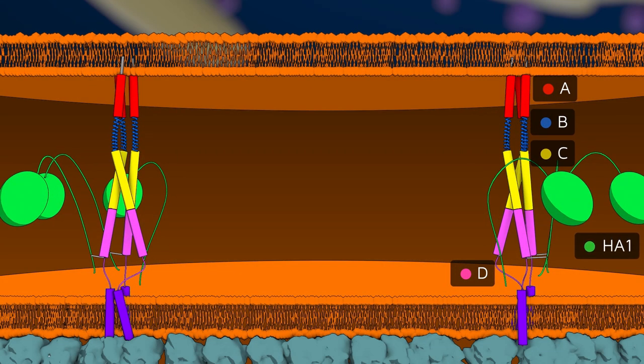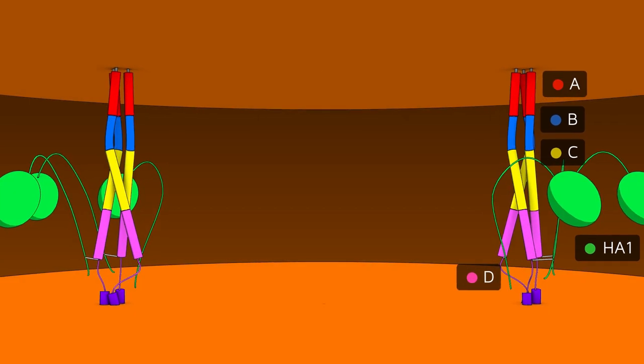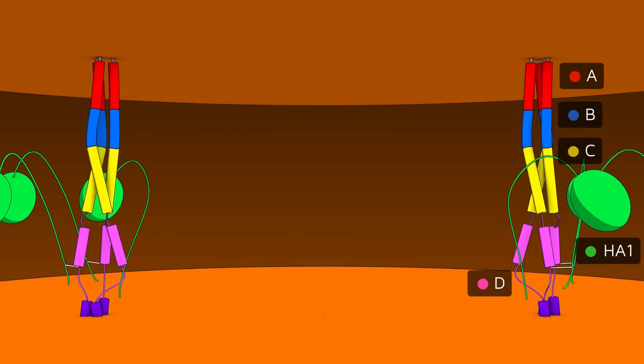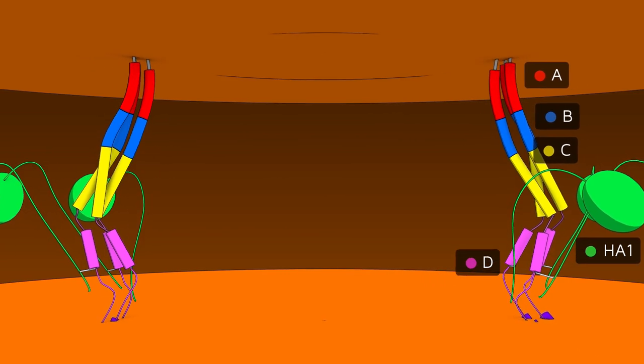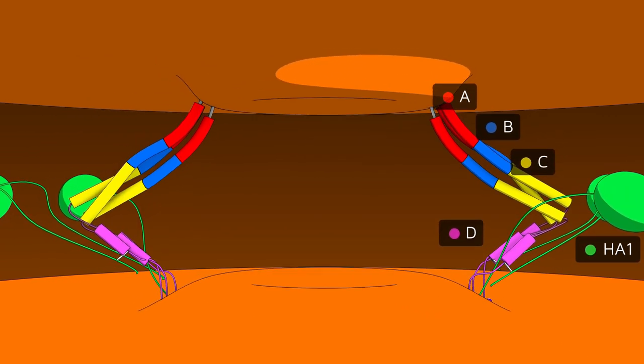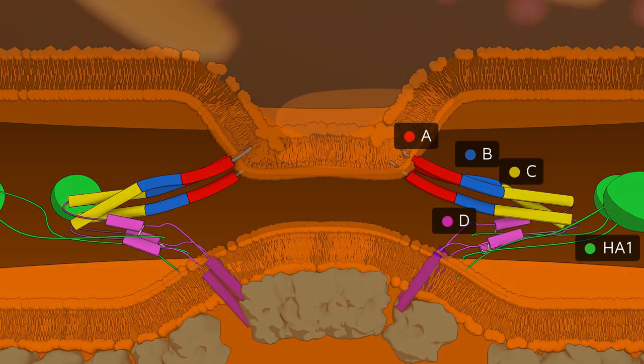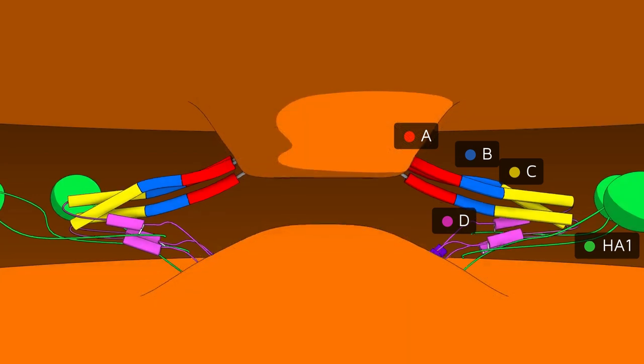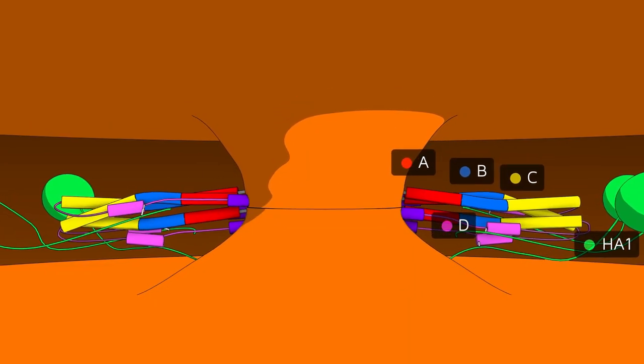The fusion peptide anchors in the endosome membrane. Helices C and D dissociate and helix D leans onto helix C. This new rearrangement pulls the viral membrane towards that of the endosome and the two membranes fuse together.